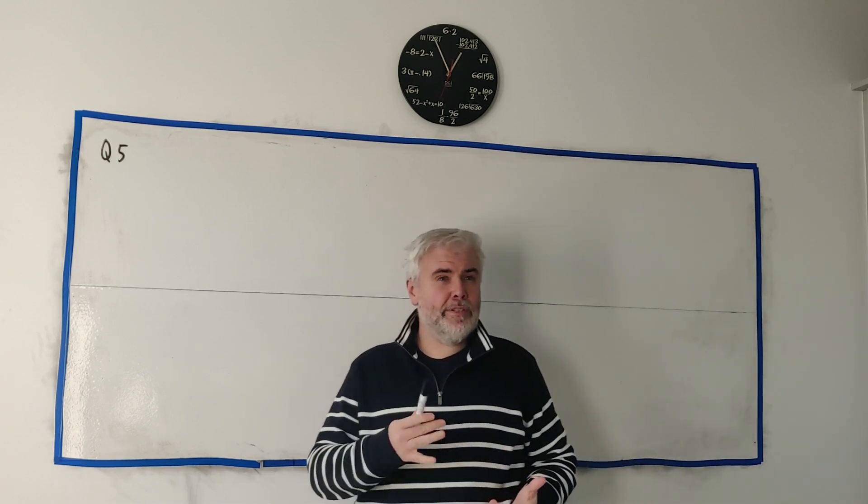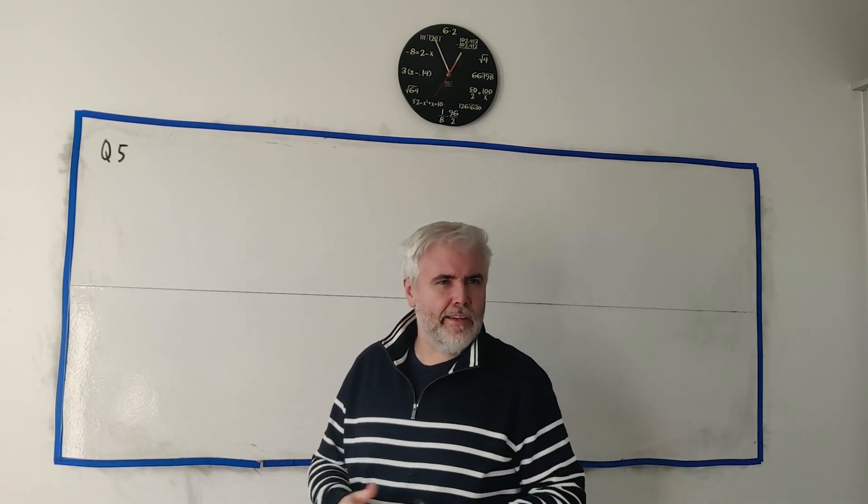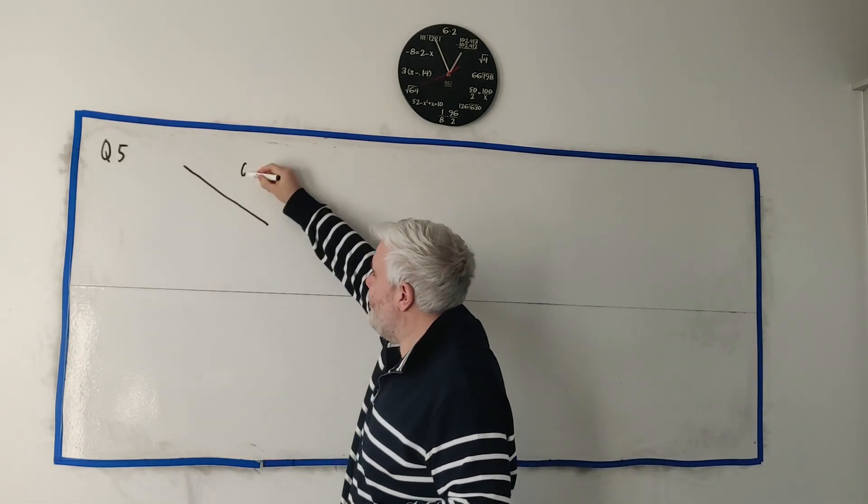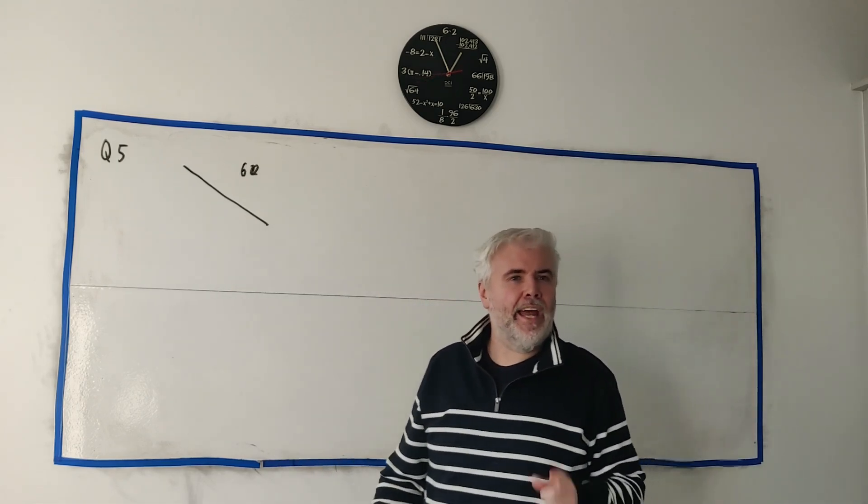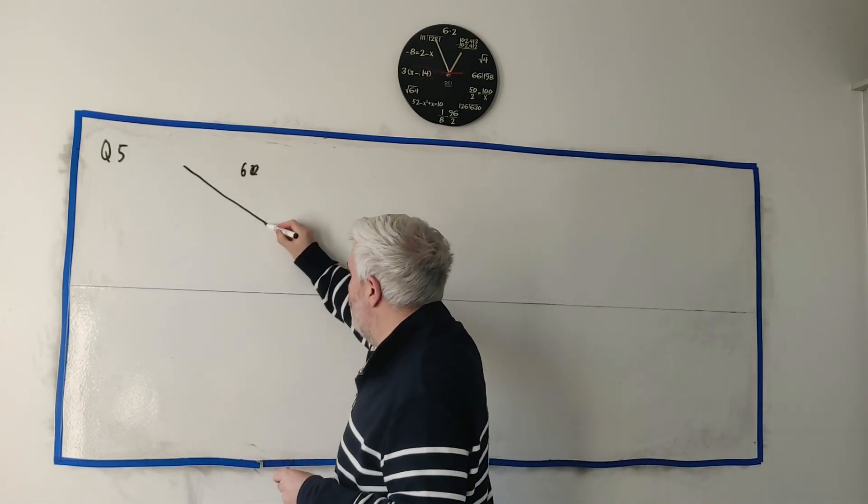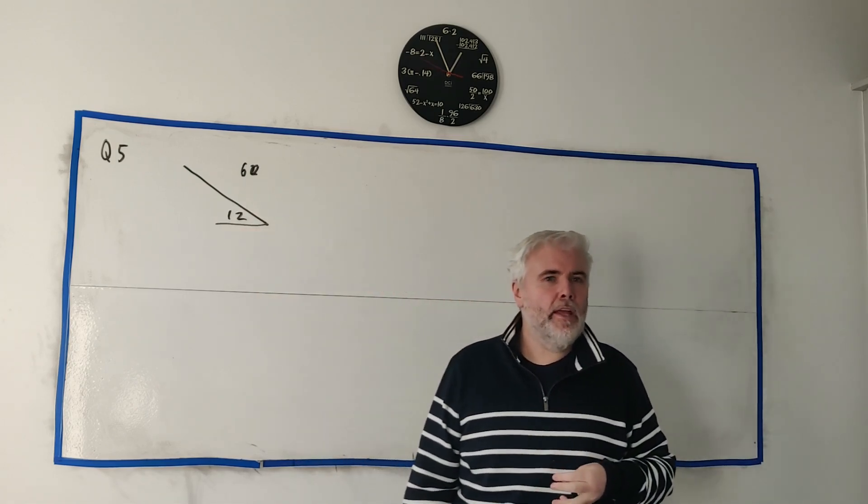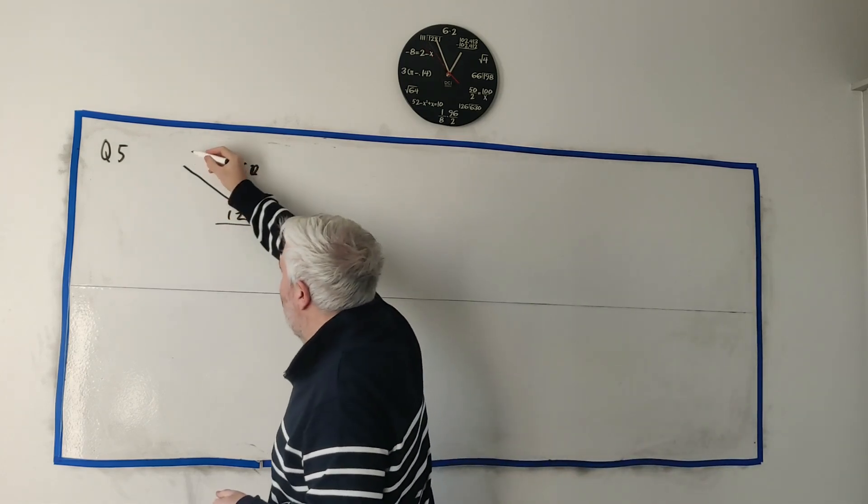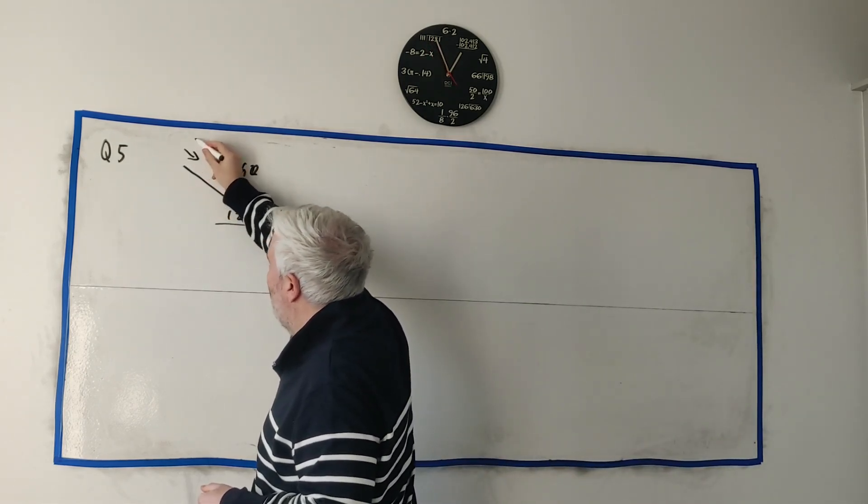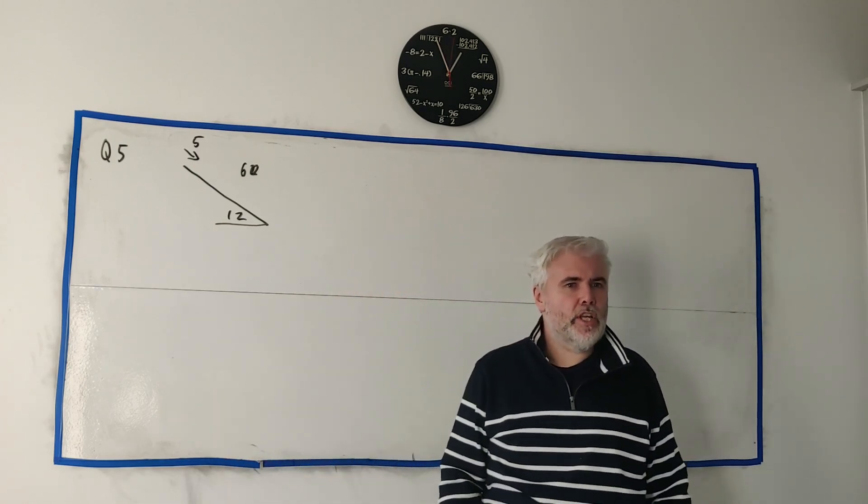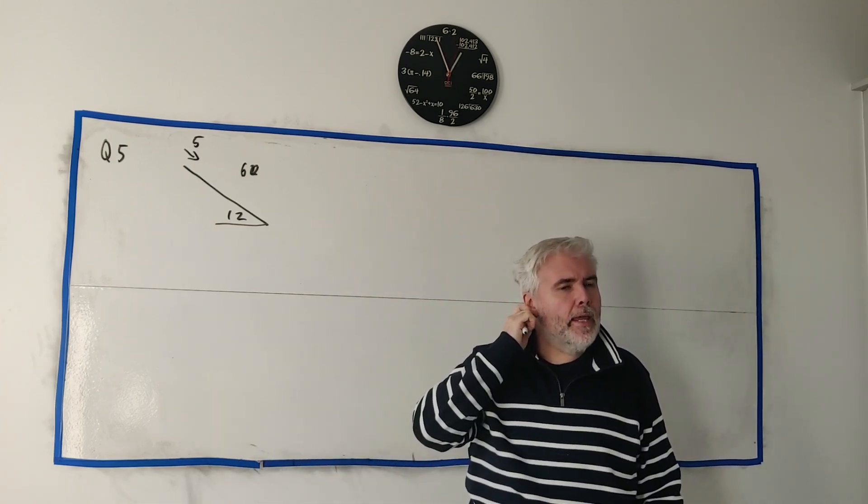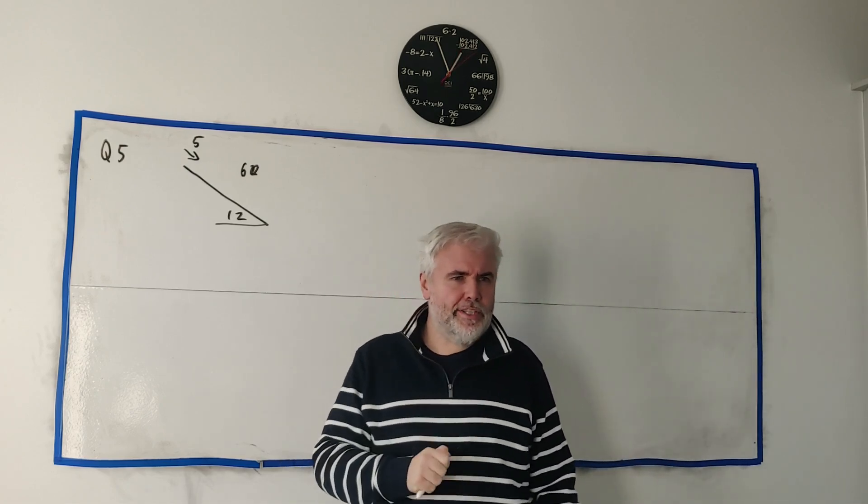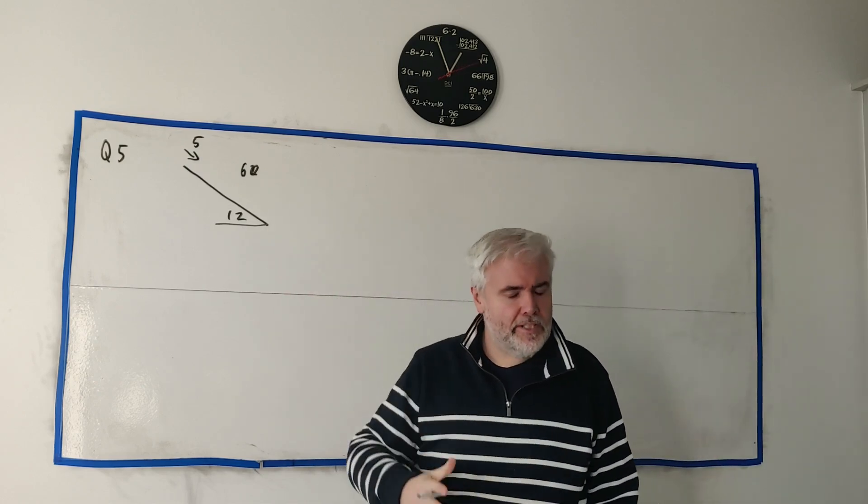In question 5 they tell us about a bobsleigh track, a slope, basically a downhill. They tell us that's 60 meters long and it has an angle of 12 degrees. A bobsleigh starts at the top of the slope with a speed of 5 meters per second. They tell us there's no resistance, there will be in part B, but for now there's no resistance and they want us to find the speed at the bottom of this hill.